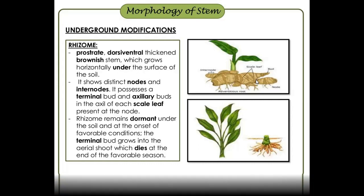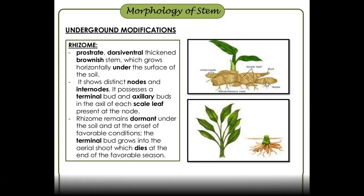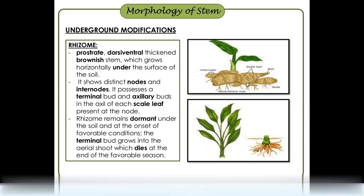The underground stem is brownish and covered by soil. In rhizomes like wheat and ginger, the nodes and internodes are very clear. There are axillary buds, terminal buds, leaves, and scales. In ginger, the scales are leaves.